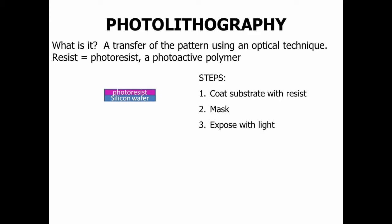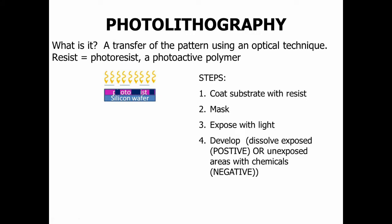Then you put a mask on top — shown here as a blue line — with small openings where you want light to get through. There are three little places there. You then expose it with light, for example UV light, and the chemical changes where light was able to interact with the photoresist. Then you develop — you can either dissolve the positive, meaning the parts that were exposed, or the negative, the parts that were not exposed. In class we're going to make a negative.